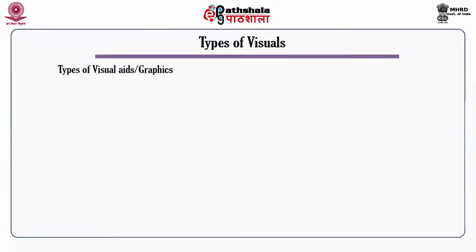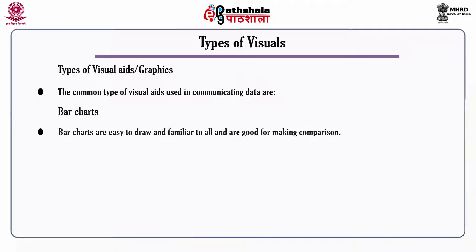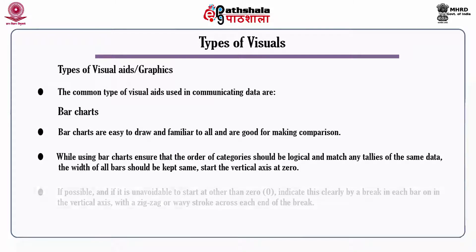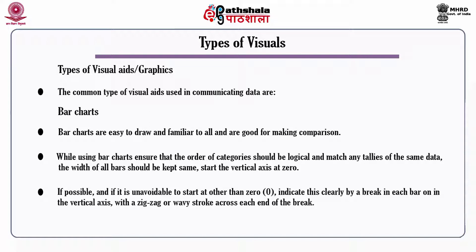Types of visual aids and graphics: bar charts are easy to draw, familiar to all, and good for making comparisons. When using bar charts, ensure the order of categories is logical and matches any tallies of the same data, the width of all bars should be kept the same, and the vertical axis should start at zero. If unavoidable to start at other than zero, indicate this clearly with a break shown by a zigzag or wavy stroke across each end of the break.